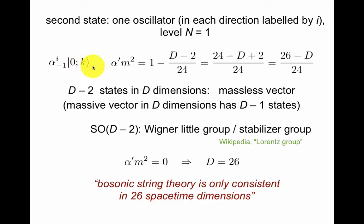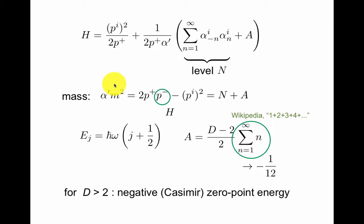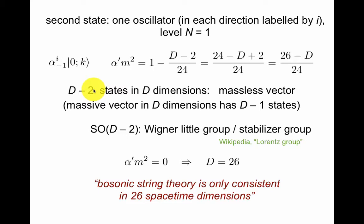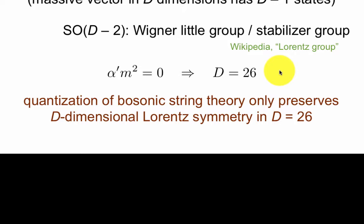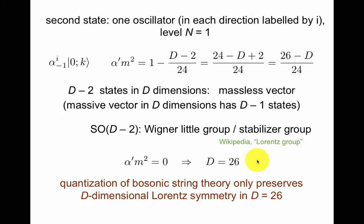I put in the creation operator α_{-1}^i acting on a state that has a center of mass momentum k. The mass squared of this state, m² = -p², one for the level. Remember we had N + A here for the mass energy. We see that this is actually (26-D)/24, and we expect a massless vector would have d-2 states in d dimensions. So if you wanted this to be massless, this would better be zero, in which case d would have to be 26. And the way to say this is that the stabilizer group, or the little group of the Lorentz group in d dimensions is SO(D-2). Sometimes this is stated as saying that bosonic string is only consistent in 26 space-time dimensions. This is a little dangerous statement. A little better to say quantization of bosonic string theory only preserves d-dimensional Lorentz symmetry in d=26.